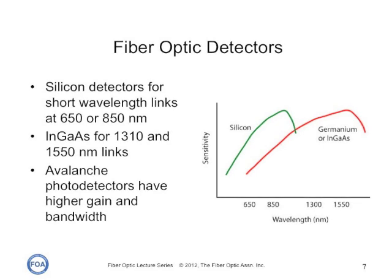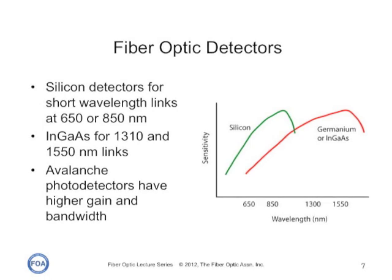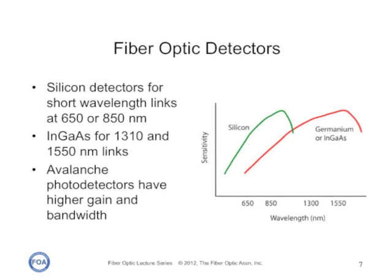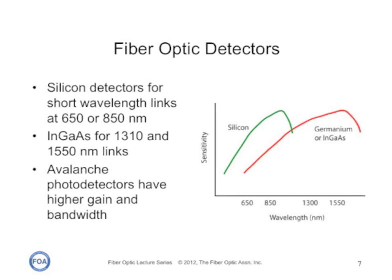Receivers use semiconductor detectors to convert optical signals to electrical signals. The type of photodetector used is determined by the wavelength of the light. Silicon photodiodes are typically used for short wavelength links — 650 nanometers for plastic optical fiber and 850 nanometers for glass fiber — while longer wavelength systems usually use indium gallium arsenide detectors, as they have lower noise and faster response than germanium.